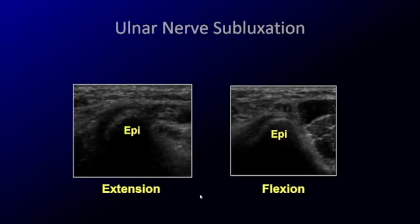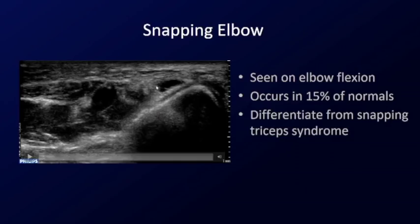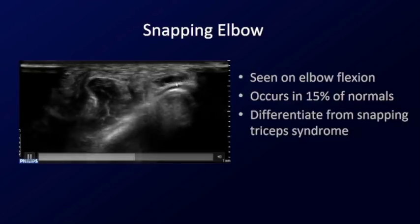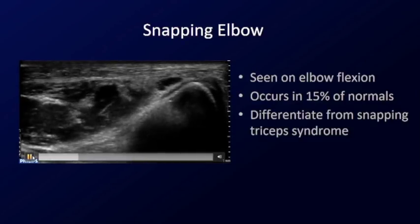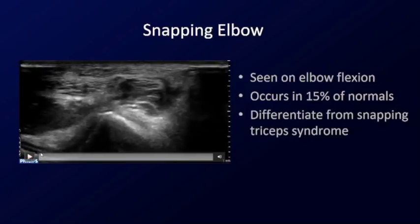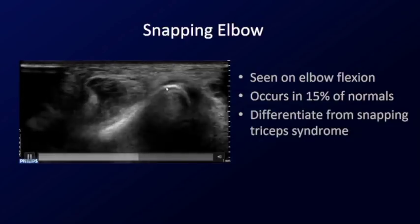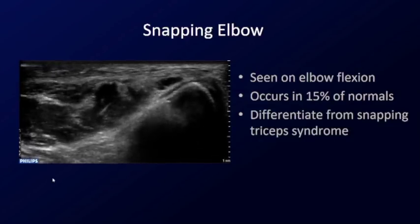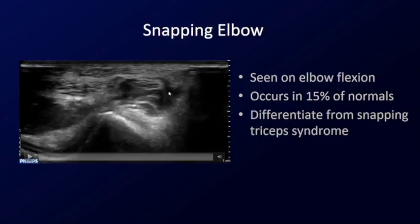The nerve can also sublux. These patients present with a snapping elbow — sometimes with pain — and snapping occurs with flexion and extension. In extension, we're looking at the medial epicondyle and the ulnar nerve. As the patient flexes, the ulnar nerve snaps and may even snap anterior onto the medial epicondyle. Dynamic scanning lets you actually watch what happens. Sometimes snapping elbow may be related to a snapping triceps as well — you can see a second snapping structure. This patient has both a snapping ulnar nerve and a snapping medial triceps.